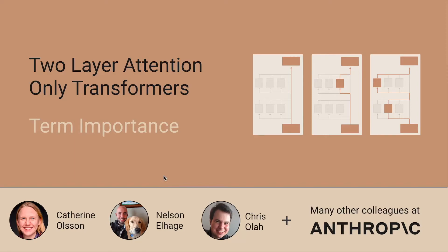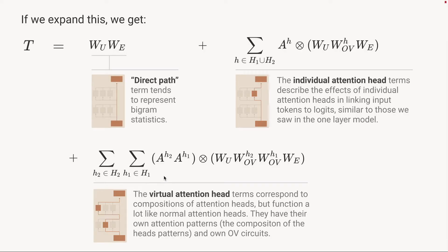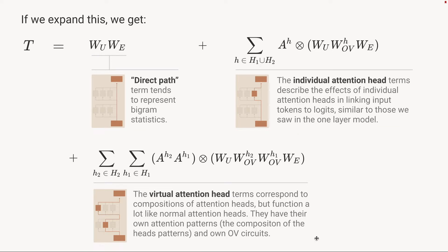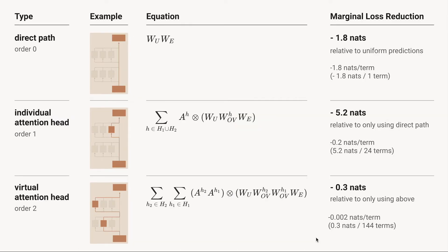In our last video, we found that we could describe two-layer attention-only transformers with a handy equation. The equation has three kinds of terms: the direct path terms, the individual attention head terms, and the virtual attention head terms. Something useful to know before we spend a lot of time trying to understand the behavior of the model is how important are those different terms. It turns out we can actually just explicitly measure that, and so that's what we'll do.